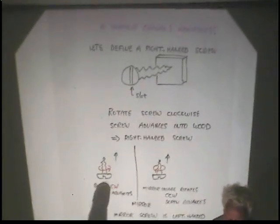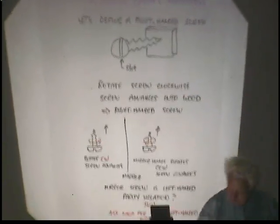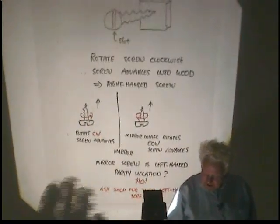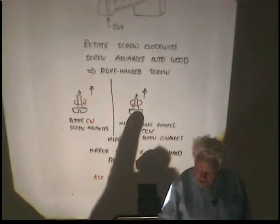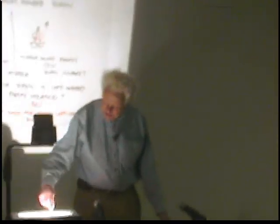A test of handedness is a good test. Here's the right-handed screw, here's the left-handed screw — but since the left-handed screw certainly doesn't violate any law of physics, it's not a test of parity, because we do have left-handed screws. You just ask the shop for a left-handed screw and you replicate the laws of physics in this way.